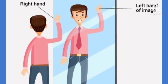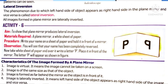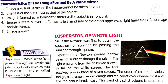Lateral inversion can only be seen in a plane mirror. Activity 6 also demonstrates that a plane mirror produces lateral inversion. For example, if you hold the letter P in front of a mirror, it appears in its laterally inverted position. Now let's discuss some of the characteristics of images formed by a plane mirror.